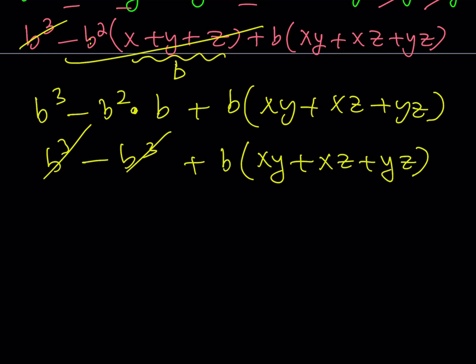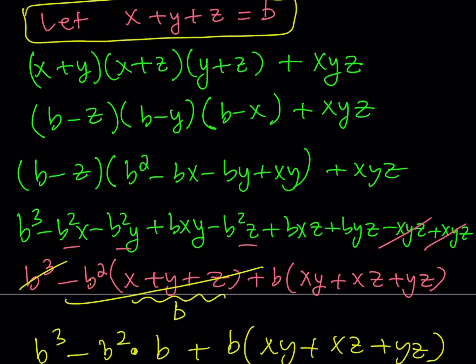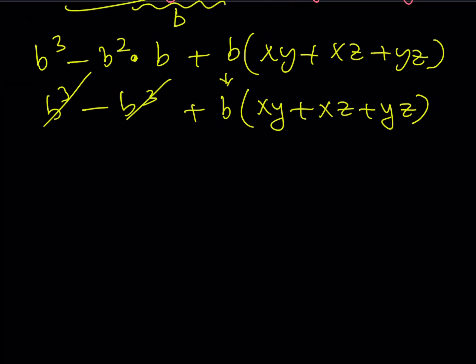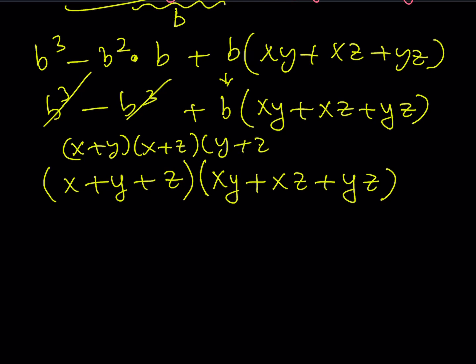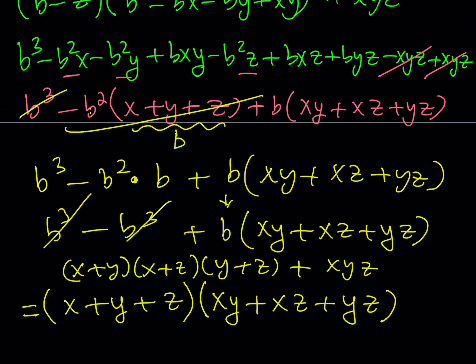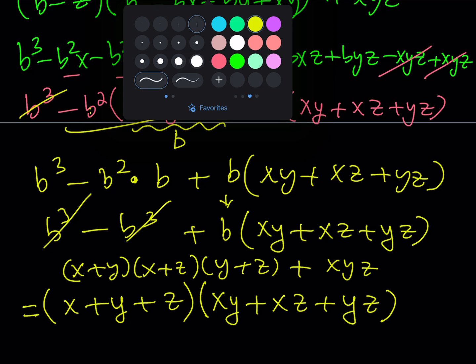But what is B? Well, B is equal to X plus Y plus Z. So if you replace B with X plus Y plus Z, then you get X plus Y plus Z multiplied by XY plus XZ plus YZ. This gives us our original expression in factored form. Our original expression was X plus Y times X plus Z times Y plus Z plus XYZ — which was a sum — and it's equal to this product, which is in factored form.